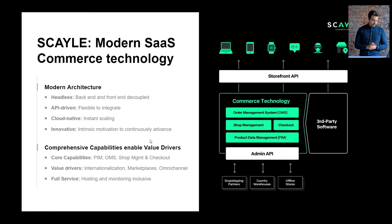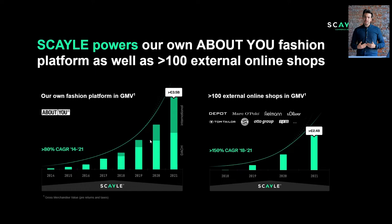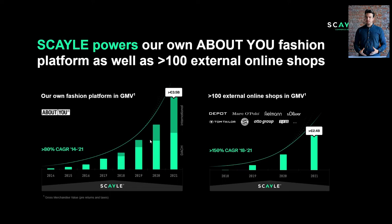The Scale technology provides the perfect foundation for you to apply your omni-channel strategy. All the hygiene factors you need to deliver a modern shipping approach towards your customers are provided within Scale. Scale has been powering the About You success for the last eight years, and in 2021 alone we generated over 3.5 billion in gross merchandising volume within the About You shop. Scale also powers over 100 external online brands.